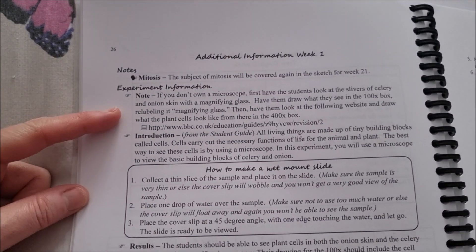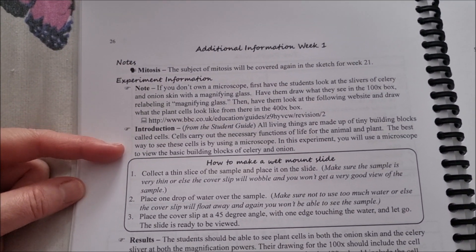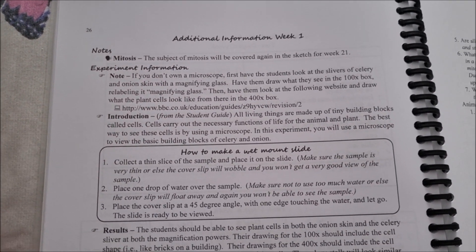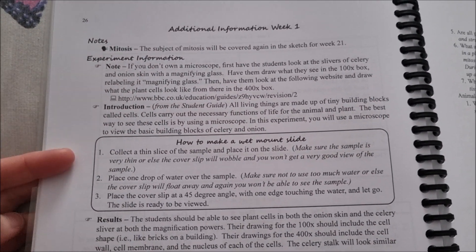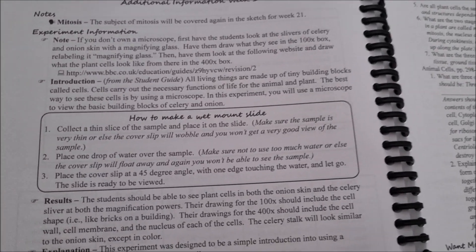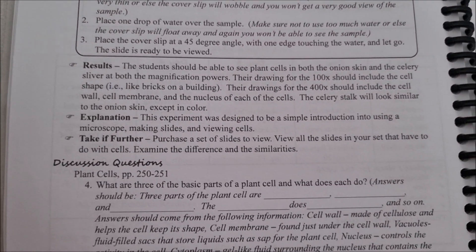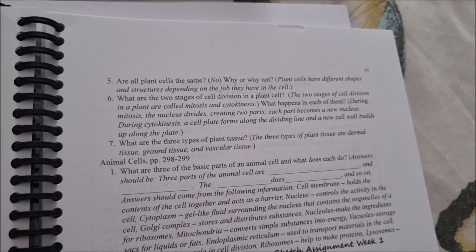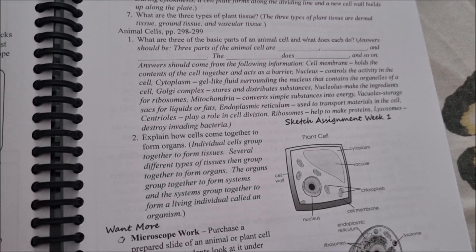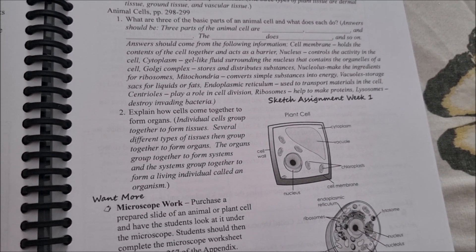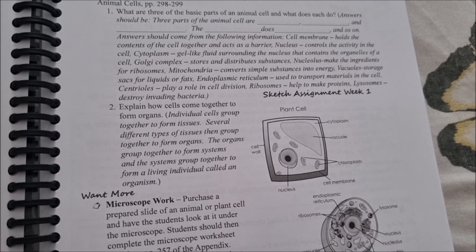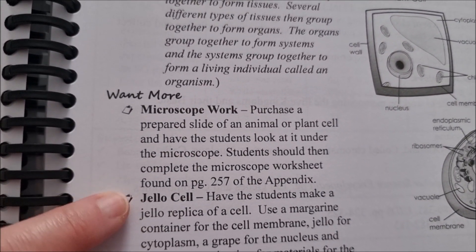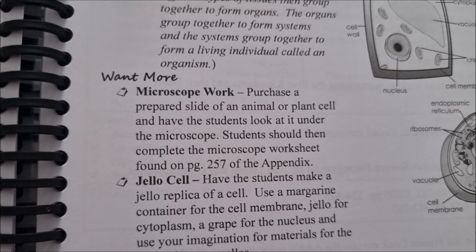There are notes and experiment information included. This content is in the student guide but also in yours so you can follow along. They explain how to make a wet mount slide, and you've got discussion questions with answers. Then there's microscope work, and in the 'want more' section there's also a jello cell activity they could make.